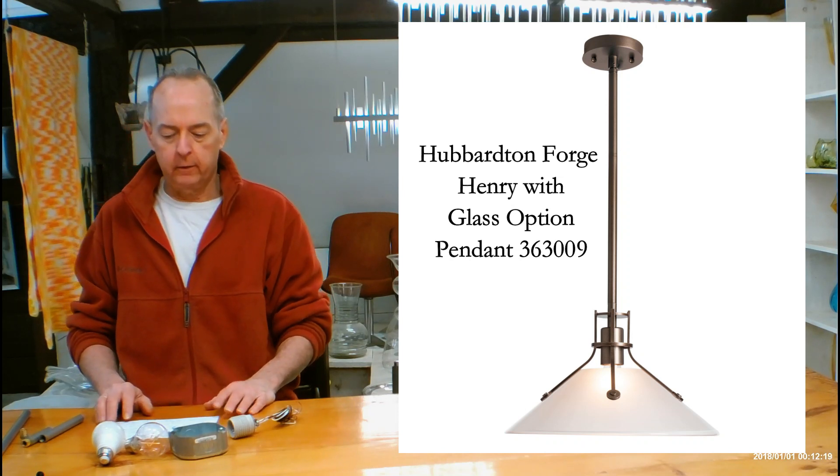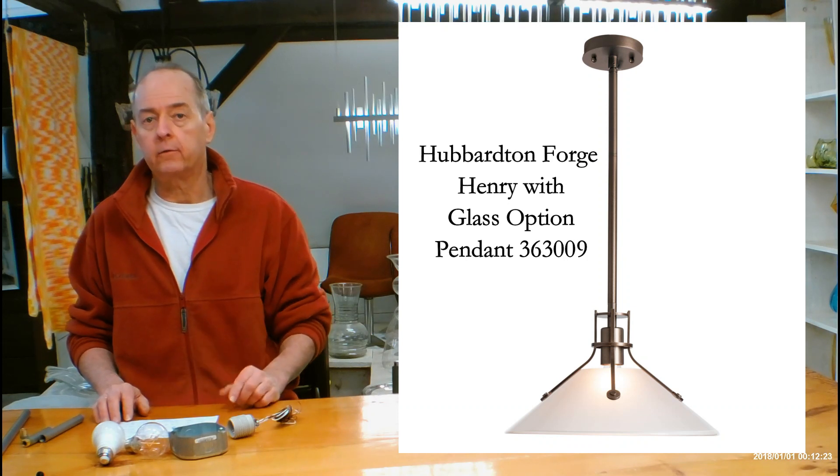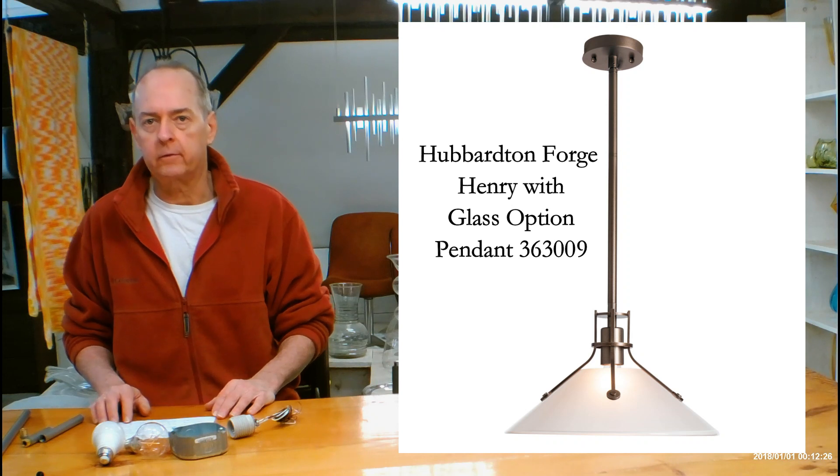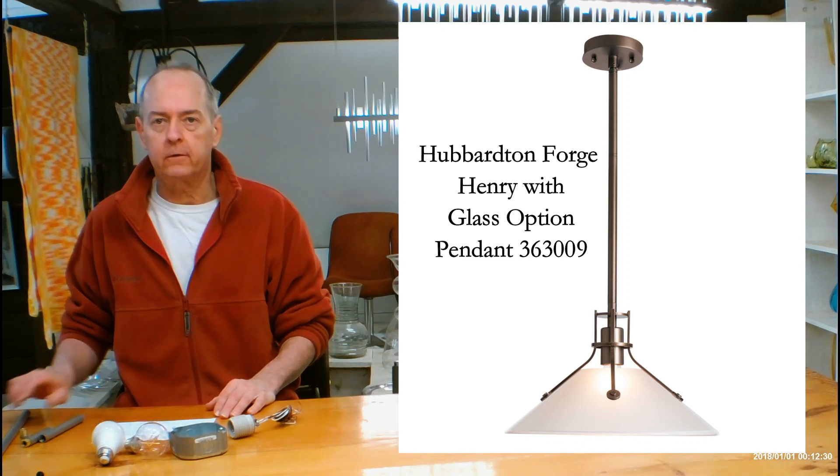This is the 36-3009. This is the smallest of the Henry outdoor pendants. There are also larger ones. Also, there's some great sconces that go with this, so check them out if you can. Let's talk about the size of the fixture itself.